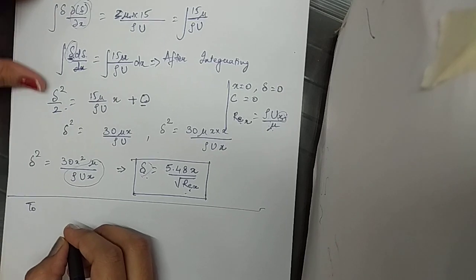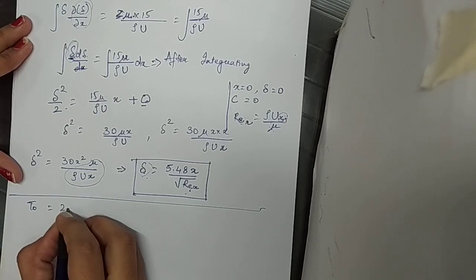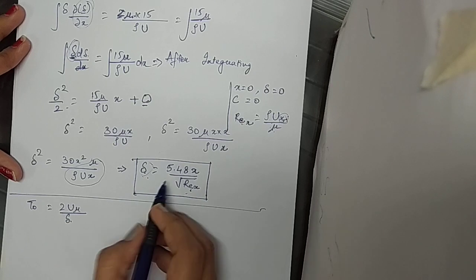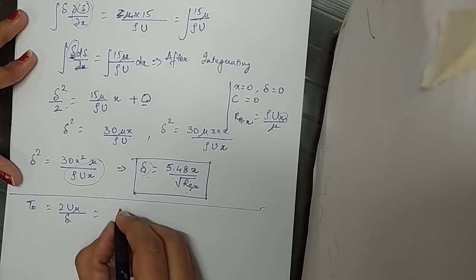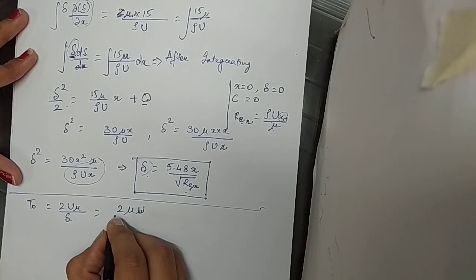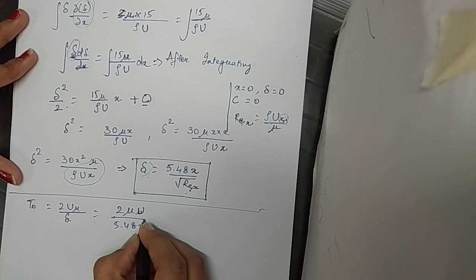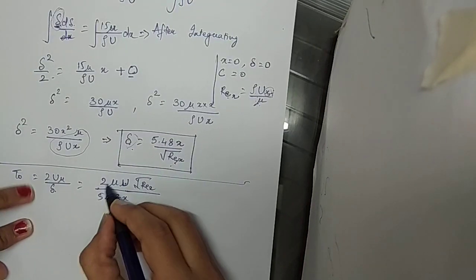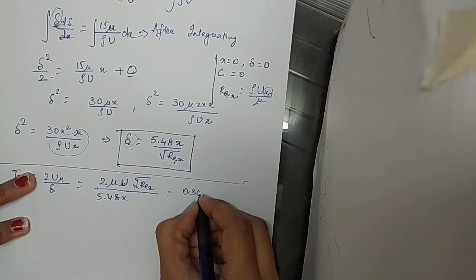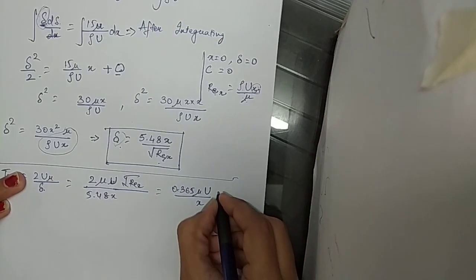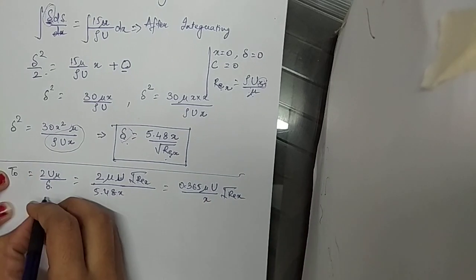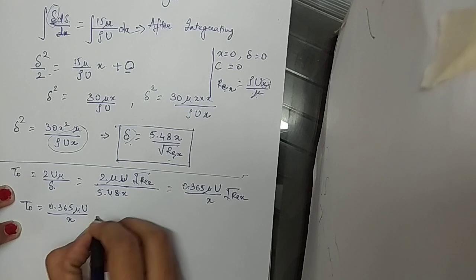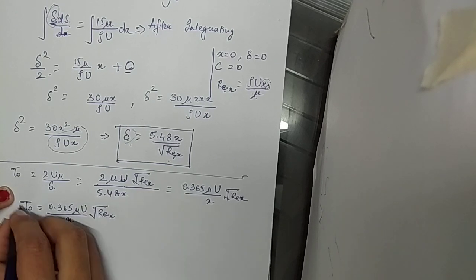We can also find the shear stress in terms of Reynolds number. We had τ₀ = 2νU/δ. Substituting δ = 5.48x/√Re_x: τ₀ = 2νU · √Re_x/(5.48x) = 0.365νU√Re_x/x. So the expression for shear stress becomes τ₀ = 0.365νU · √Re_x / x.